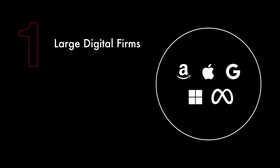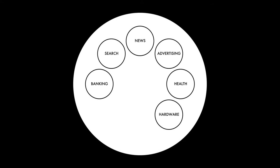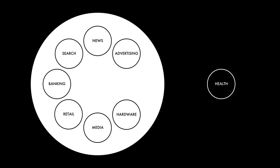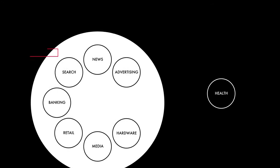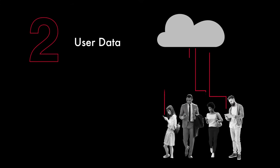So what's different? First, we now have very large digital firms, many of them social media platforms, that have changed the marketplace fundamentally. These firms operate in multiple markets at the same time and can dominate in many of them, which is vastly different from firms that might dominate in a single market. And second, they get their dominance from the personal data they have on users, and they can monetize this by selling that information to advertisers, who more often than not are their true clients.